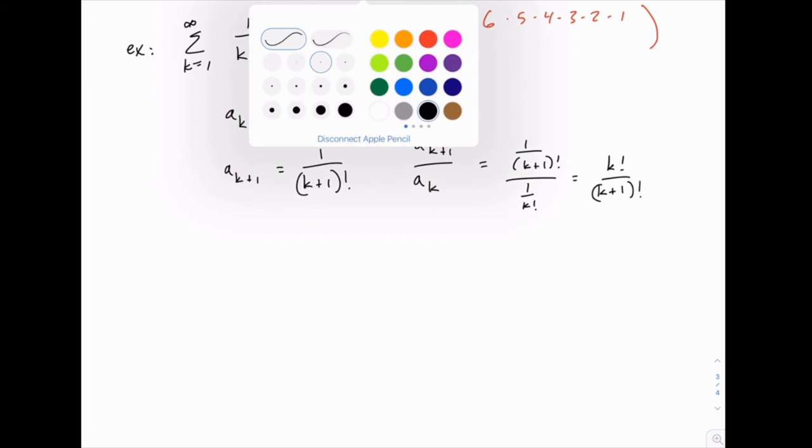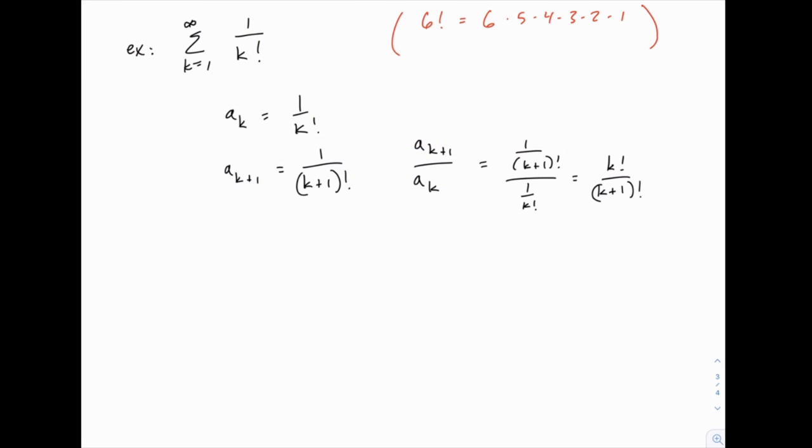Then notice that we have this pattern k factorial over (k+1) factorial, and we want to see how this simplifies. To do this, I'm going to come back to a specific example. We have six factorial written up above. If we had seven factorial, that would be 7 × 6 × 5 × 4 and so on.